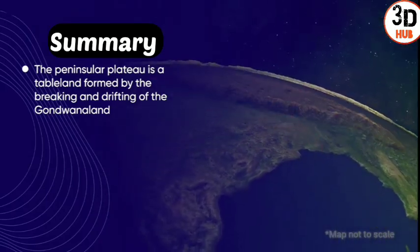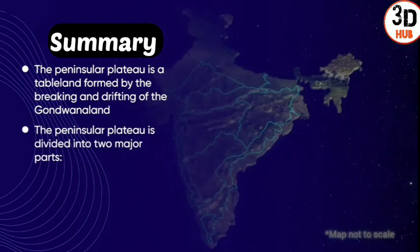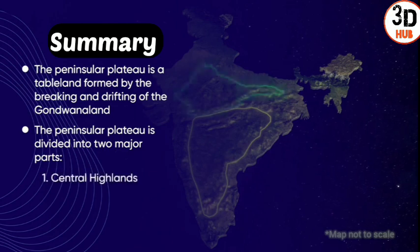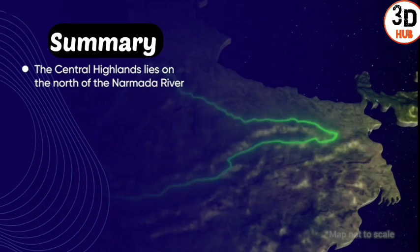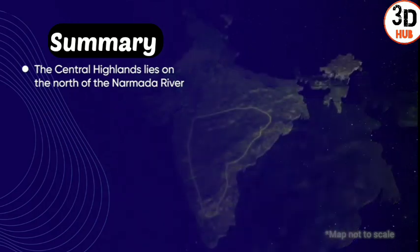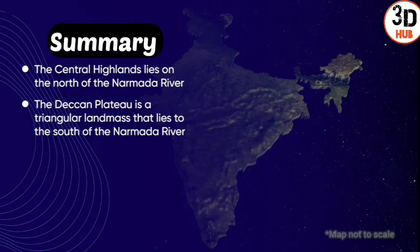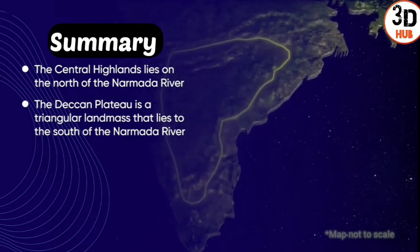Let's summarize. The Peninsular Plateau is a tableland formed by the breaking and drifting of the Gondwana land. It is divided into two major parts: the Central Highlands, which lie to the north of the Narmada river, and the Deccan Plateau, which is a triangular landmass that lies to the south of the Narmada river.